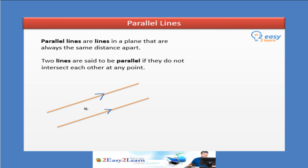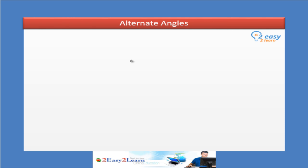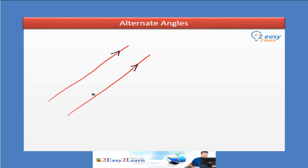If a third line intersects the parallel lines, we call it a transversal. Let's discuss the angles made by this transversal. We have these two parallel lines — I marked arrows to show these two lines are parallel — and a transversal cutting across them.